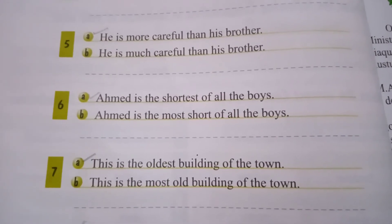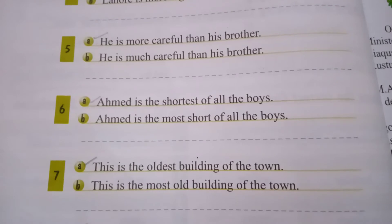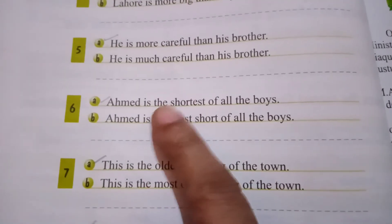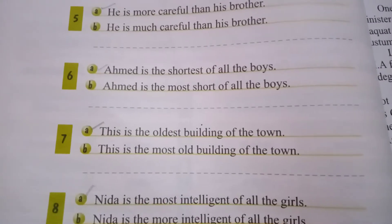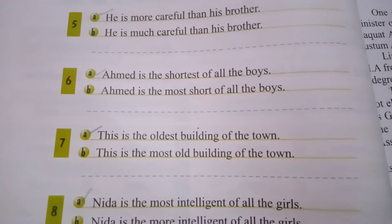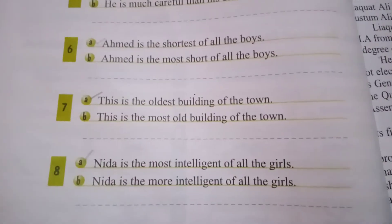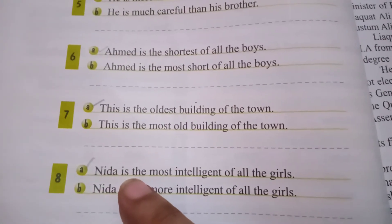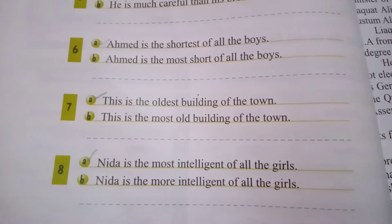The sixth correct option is: Ahmed is the shortest of all the boys. Here we are using the superlative degree of adjectives, that is why we are using 'the.' Again, we are using the superlative degree: this is the oldest building of the town. And again, here also we are using the superlative degree: Nida is the most intelligent of all girls.